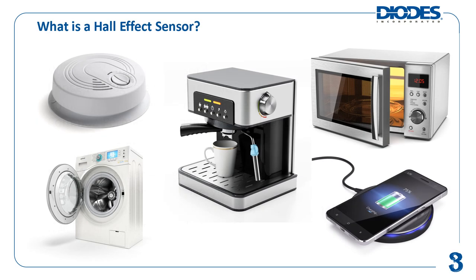A Hall Effect Sensor is a type of sensor that detects the presence and strength of magnetic fields using the Hall Effect, converting magnetically coded information into electrical signals. It is a type of contactless sensor, meaning these sensors do not undergo mechanical wear and have virtually infinite life. Basic applications of Hall Effect Sensors are to sense the position, proximity, and rotation of an object with a magnet attached to it.